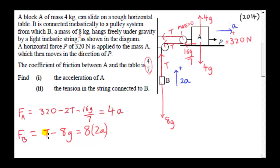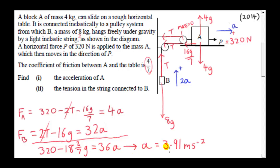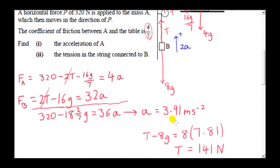We have two equations and two unknowns. Multiplying one equation by 2 ensures the tensions cancel when we add them. Solving gives A equals 3.91 meters per second squared for the acceleration of block A. The acceleration of B is twice that, giving 7.81 meters per second squared. We can then substitute back to solve for T.